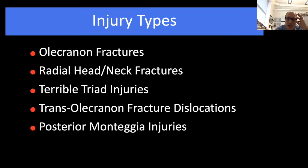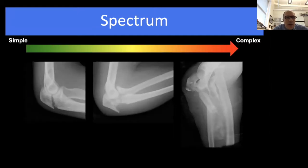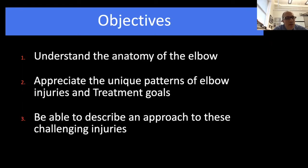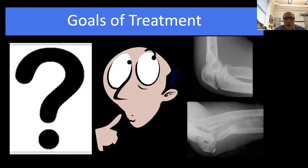The types of fractures and injuries we're going to discuss today include olecranon, radial head and neck, terrible triad, trans-olecranon, and posterior Monteggia. This is a spectrum of injury that can range from simple to complex. The objectives are to understand elbow anatomy, appreciate the unique patterns of elbow injuries and treatment goals, and describe how we approach these injuries.